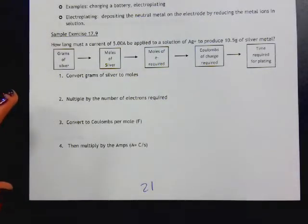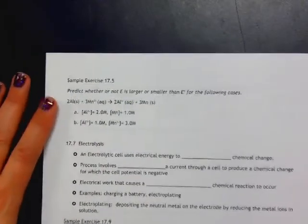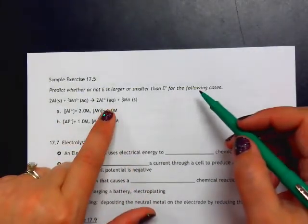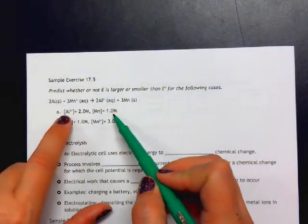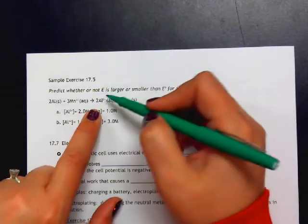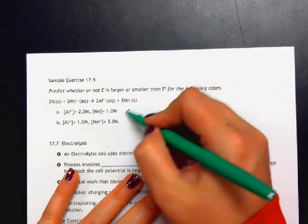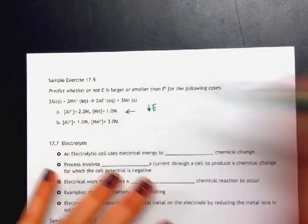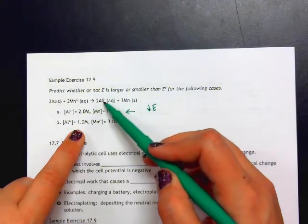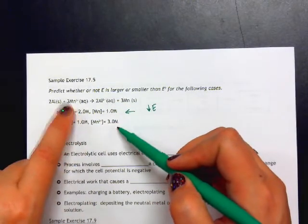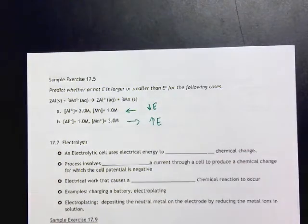We'll look at that some more in the lab activity we're going to do later in the week. Before we move on, we have some more example problems here. We want to predict whether E is larger or smaller. In this instance, if our concentration of aluminum is 2 and our concentration of magnesium is 1, what would happen? We're increasing the concentration of aluminum. It's greater than 1, so that means the reaction would shift to the left, and thereby it would decrease E. In this instance, aluminum concentration is staying the same at 1, but we're increasing the concentration of manganese. Increasing your reactants shifts your reaction to the right, which would increase our cell potential.